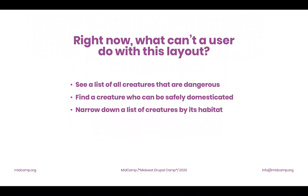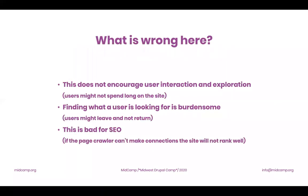If you put yourself in the user's shoes, what can you not do with this layout? You can't find a list of all the creatures that are dangerous. If you want a pet, you can't find a creature that can be safely domesticated. And if you saw something interesting in the bog, you can't narrow the creature down by its habitat. Big picture: this does not encourage user interaction and exploration. Finding what a user is looking for is burdensome. Users might leave and not return. And this is bad for SEO — if the page crawler can't make connections, the site won't rank well.